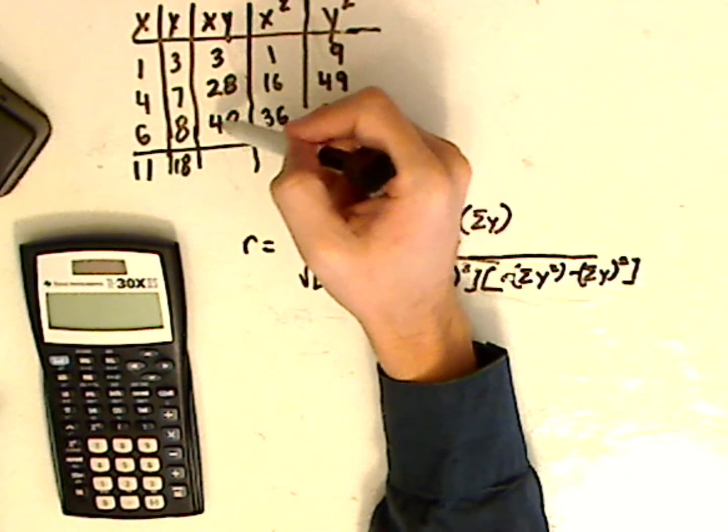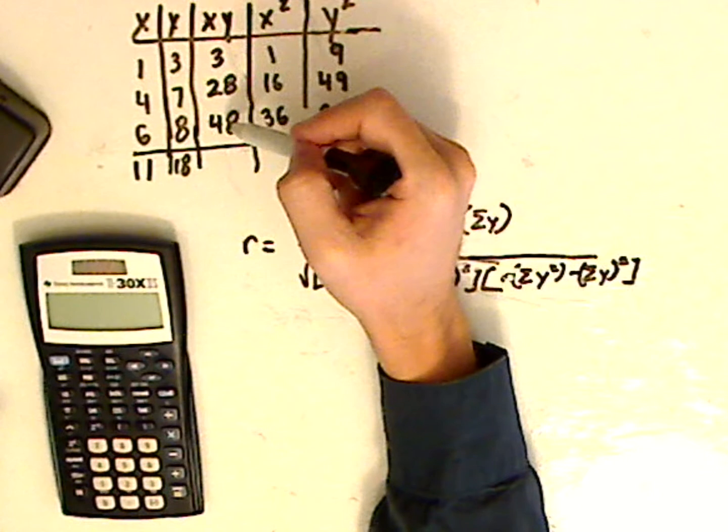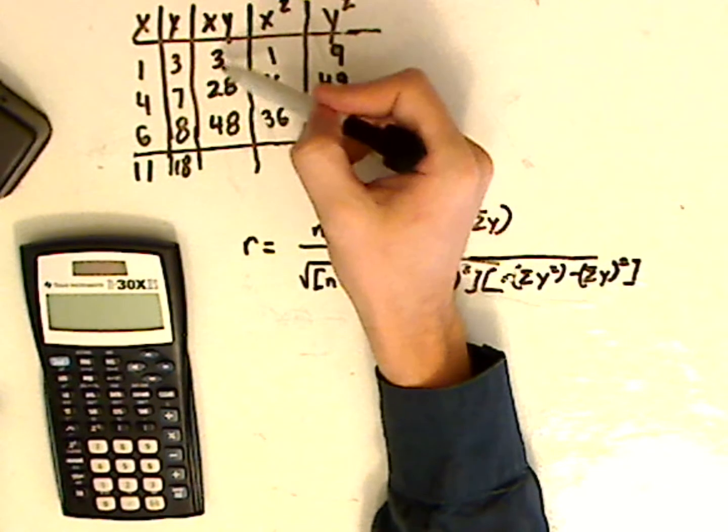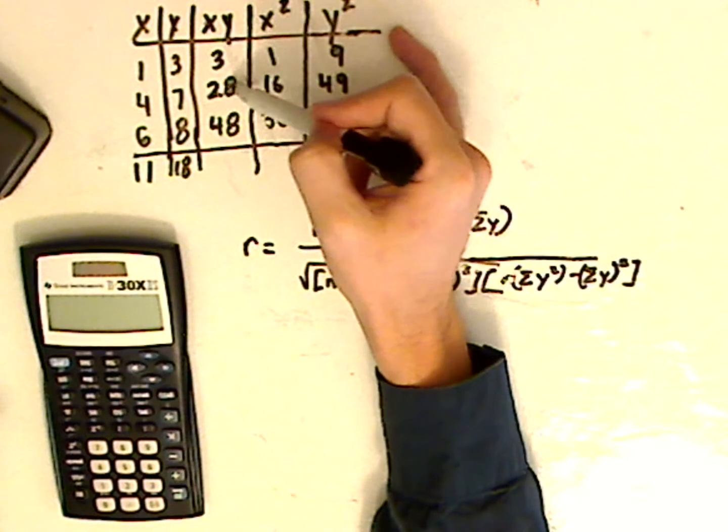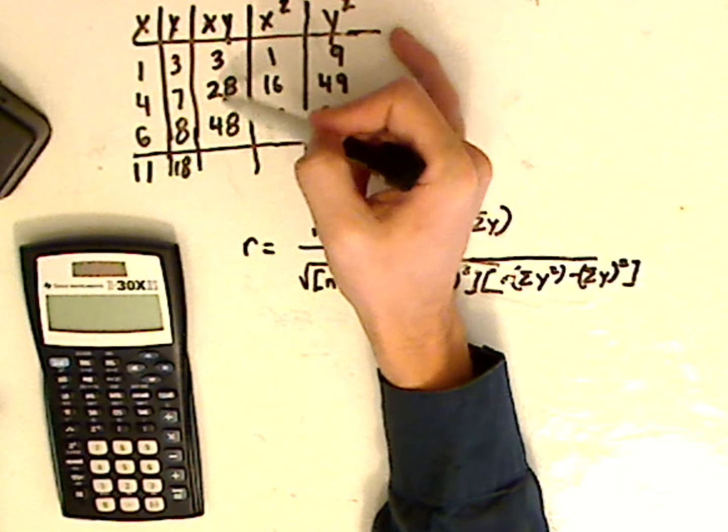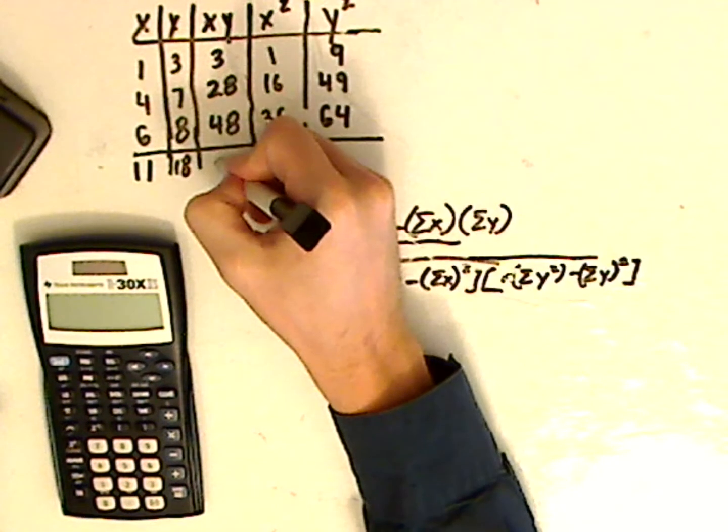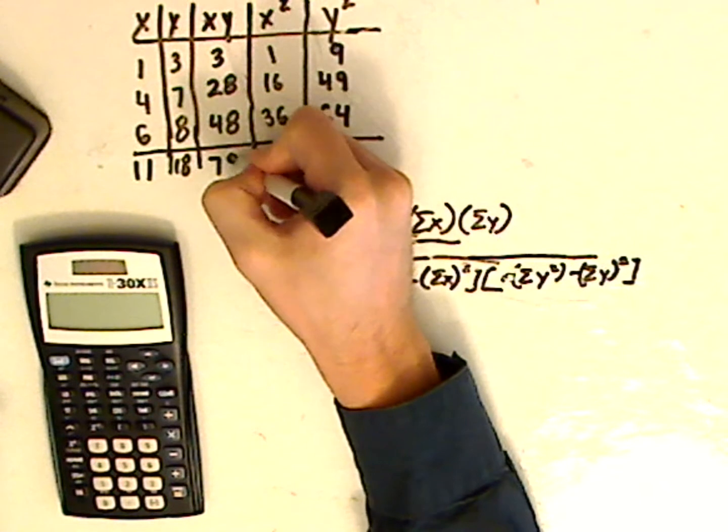Now sometimes what I like to do is I kind of like to work backwards. So I might not, I'll just go with this route. 3 plus 28 is 31, 31 plus 48 is 79.